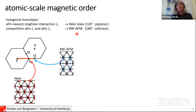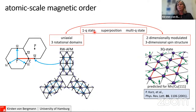Looking at geometric frustration on a hexagonal lattice with anti-ferromagnetic coupling J1: the ground state is the Néel state with 120-degree angles between nearest-neighbor moments, with a three-atom unit cell. With a competition between J1 and J2 (frustrated exchange), the ground state is a row-wise anti-ferromagnetic state — one row spin-down, next row spin-up. This occurs in three rotational domains — a 1Q state. One can make a superposition to a multi-Q state, getting a two-dimensionally modulated spin texture where the nearest-neighbor angle is always the tetrahedron angle, with a four-atom magnetic unit cell. This state was predicted for Mn/Cu(111) but was never experimentally found.